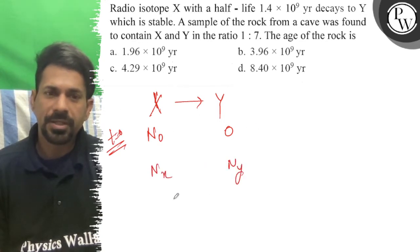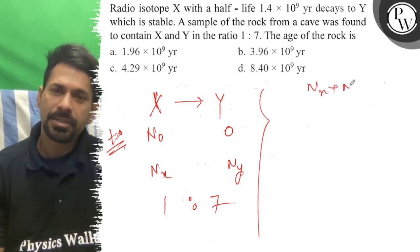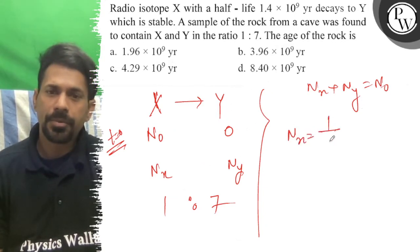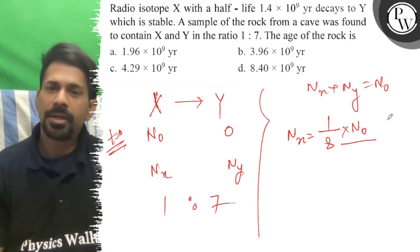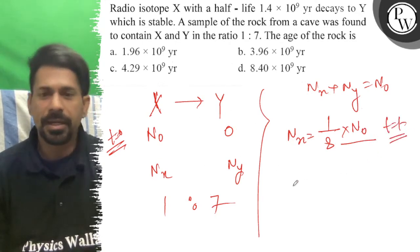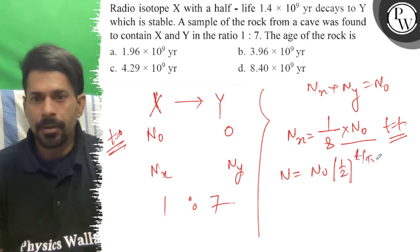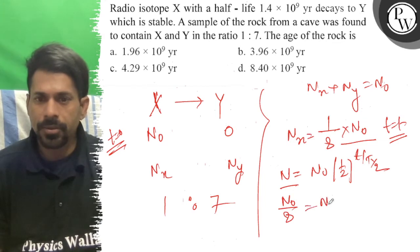So Nx plus Ny equals N₀. If you find Nx, it is 1 over the sum of the ratio, into N₀ — so Nx equals N₀/8. Now we can use the decay formula: N = N₀ × (1/2)^(t/t½). So N₀/8 equals N₀ × (1/2)^(t/t½).